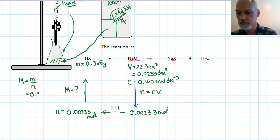0.335 grams divided by my number of moles gives me the molar mass of my acid to three significant digits as 144 grams per mole.